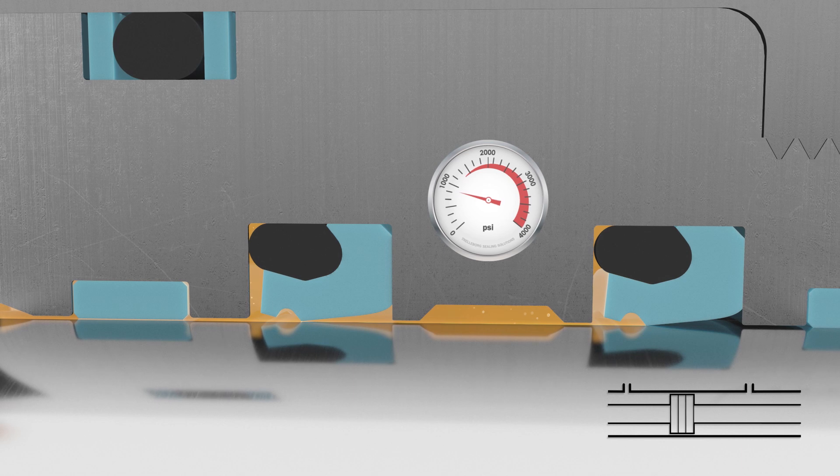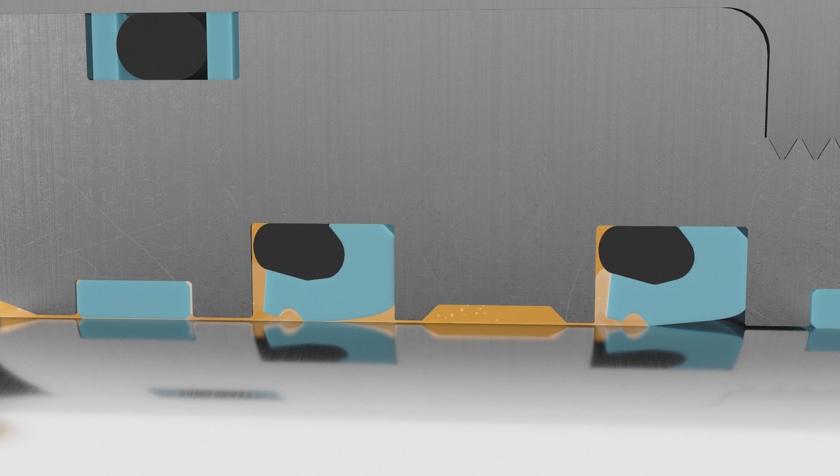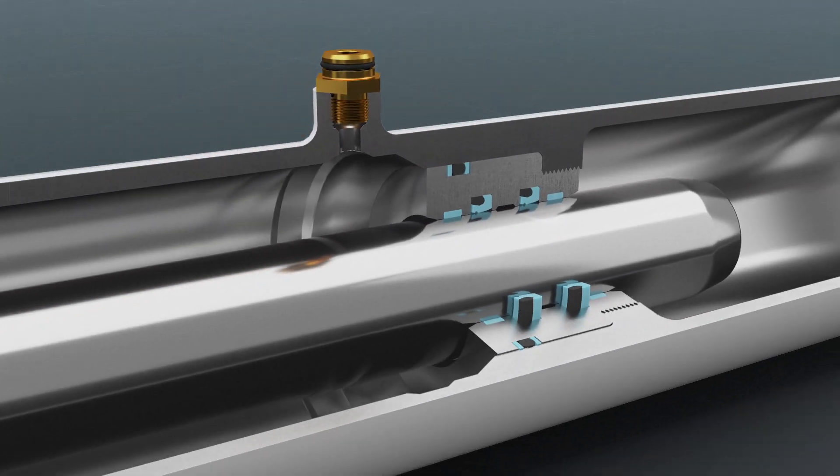Before the reservoir reaches a critical level, oil pumps back into the cylinder to ensure adequate lubrication and improved seal life.